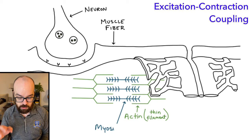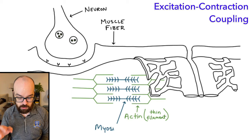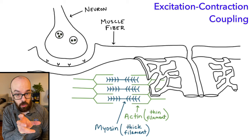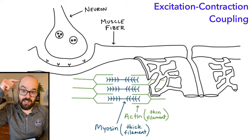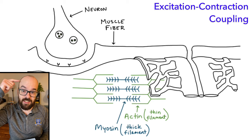Underneath the sarcoplasmic reticulum are the myofibrils, which contain the myofilaments. These are the myofilaments here, and we have two of those — the actin and the myosin. That's kind of our end goal: to get them to pull on each other and shorten the length of the sarcomere, which is the space between this z-line and this other z-line, and as that happens, our muscles contract. But it all starts with the brain sending action potentials through neurons, which is where we're going to start right now.